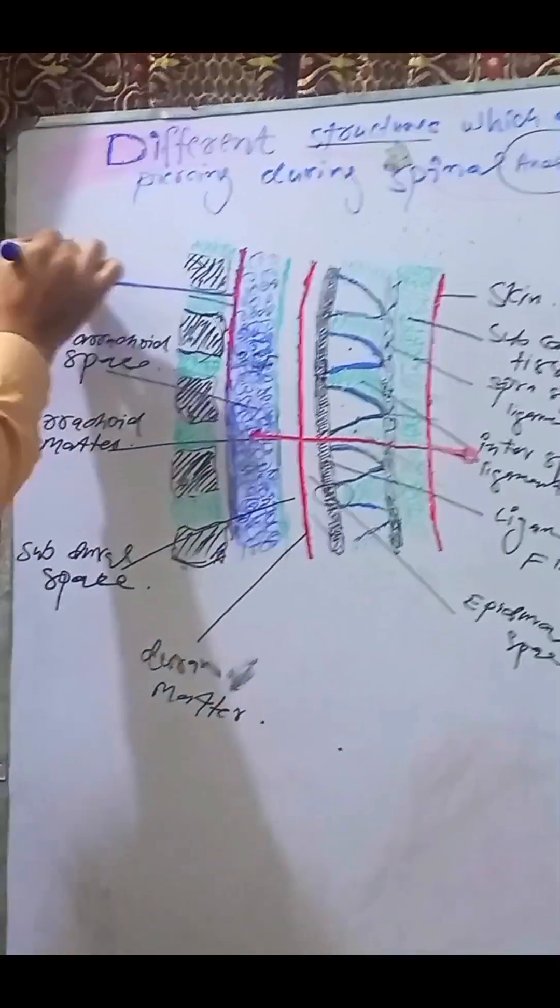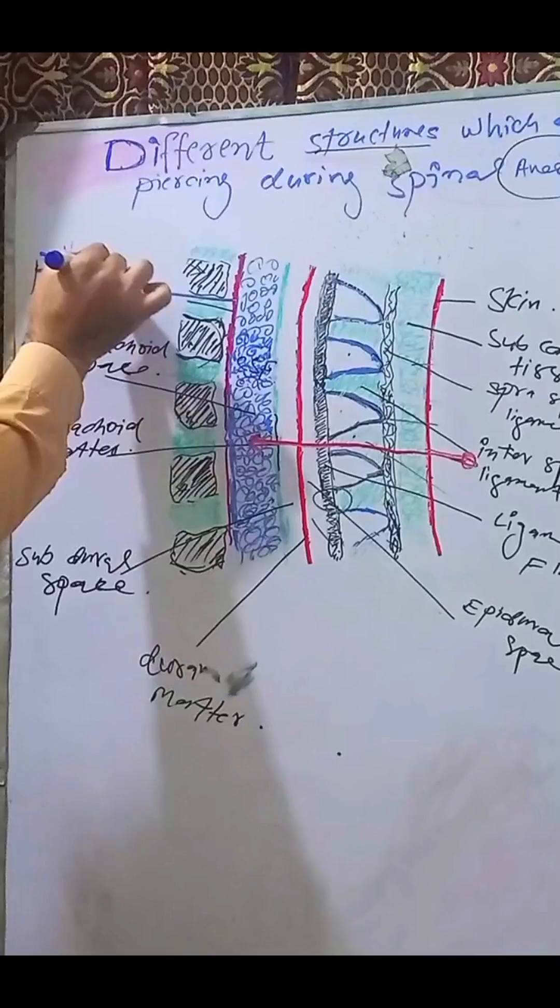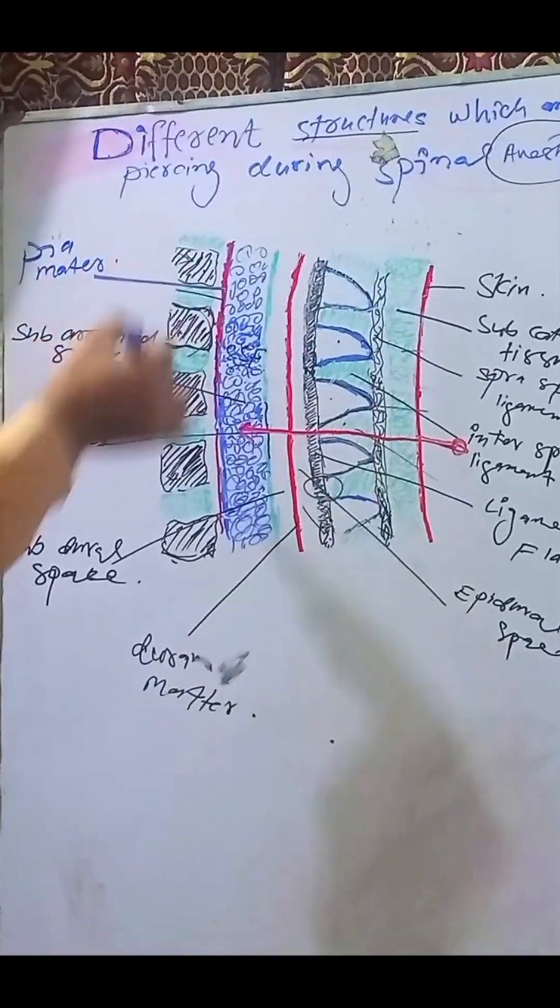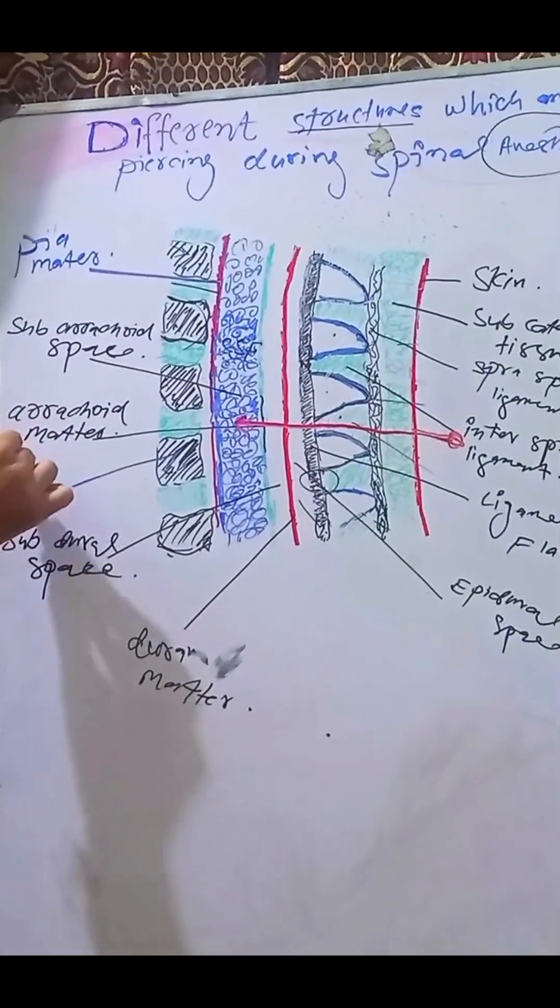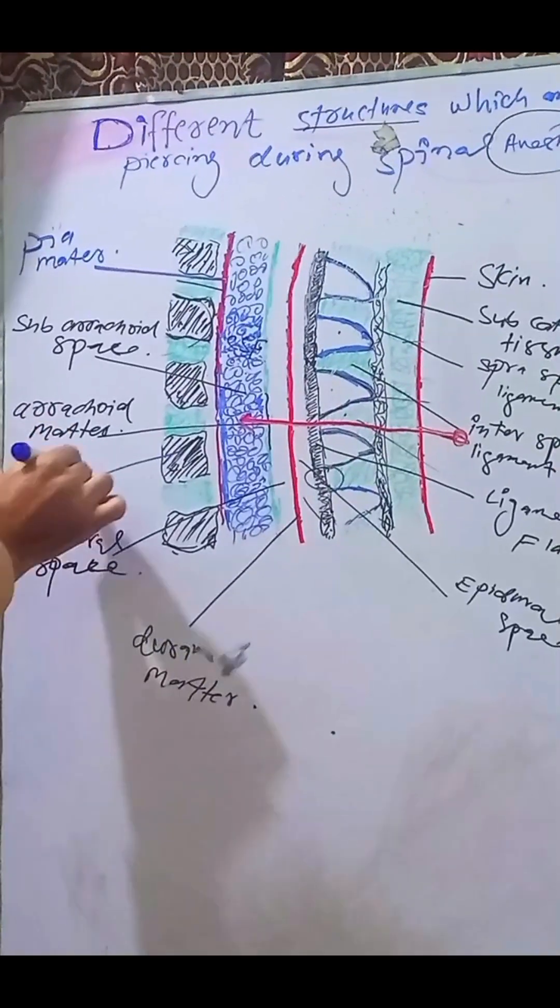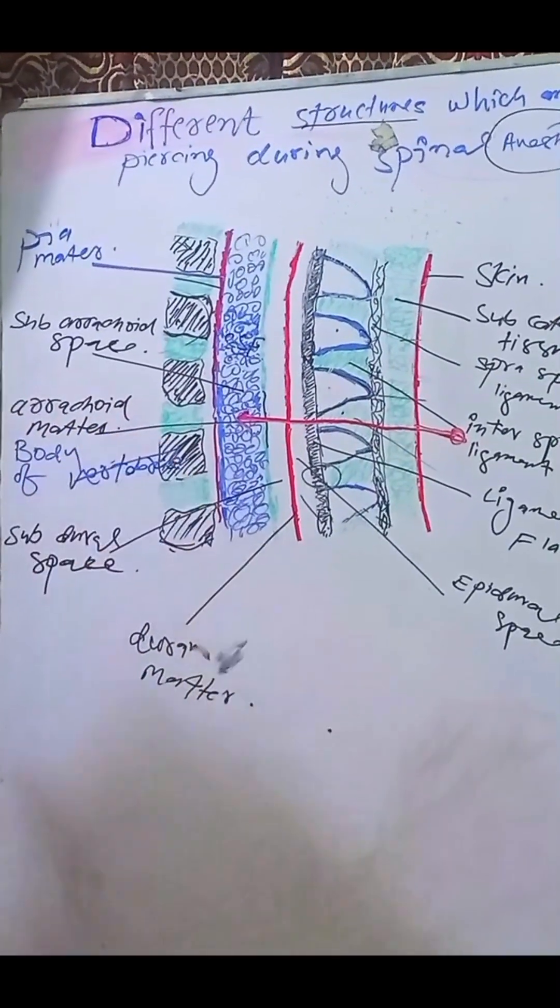There is the last layer which is called the pia matter. There are also some ligaments, posterior and anterior longitudinal ligament, and the last one is the body of vertebrae.